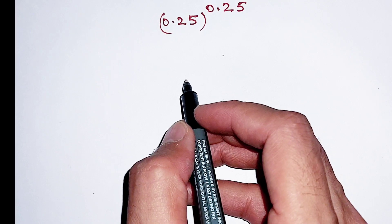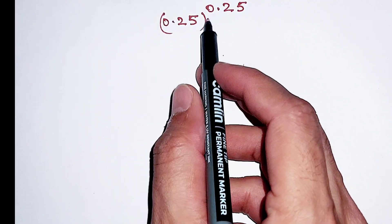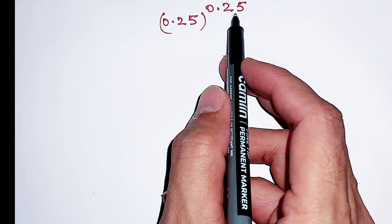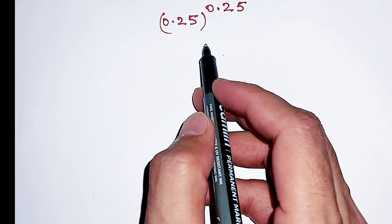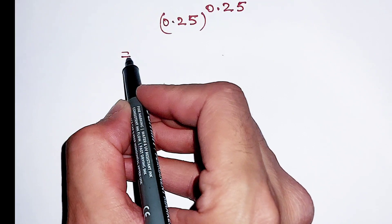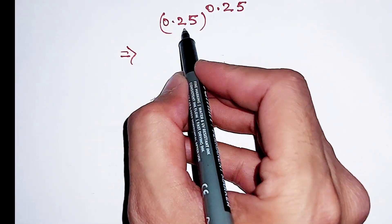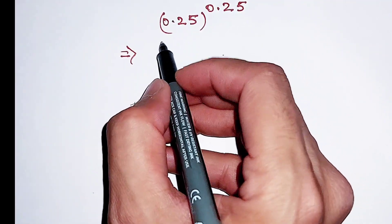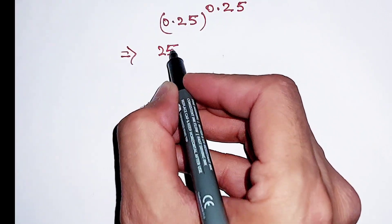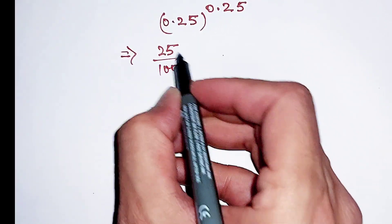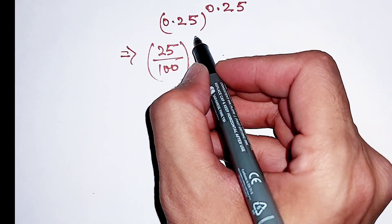Hello friends, the question is 0.25 to the power 0.25 and we have to simplify this. Now this can be written as 25 divided by 100, and this 0.25 in the exponent can be written as 1 divided by 4.